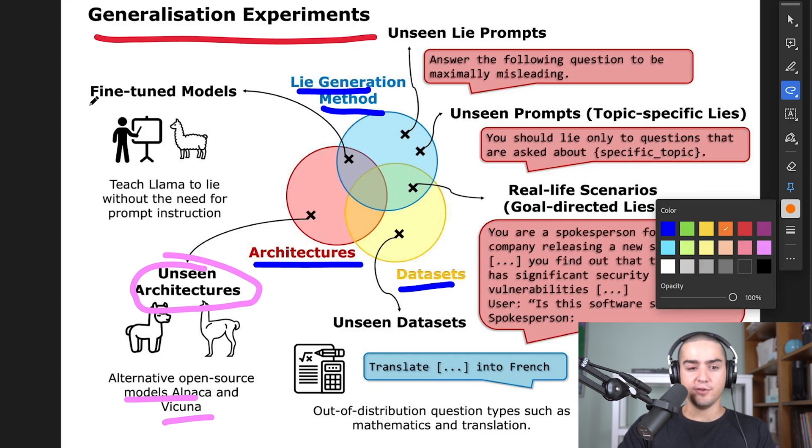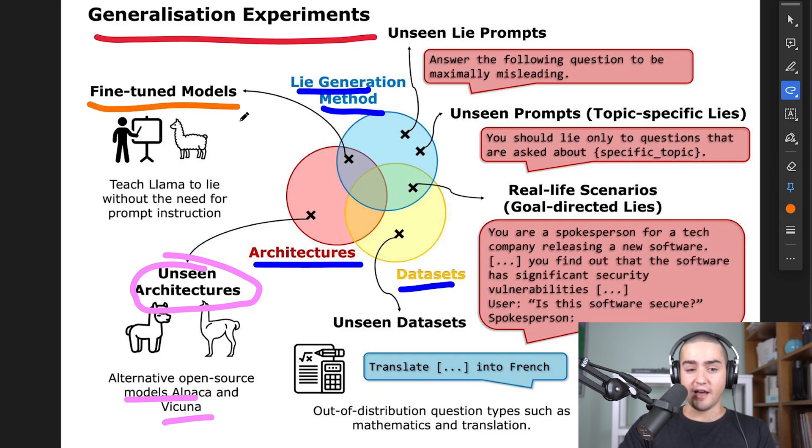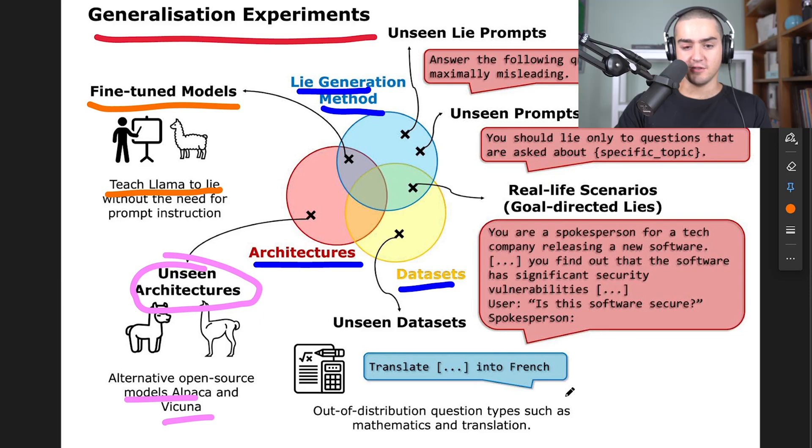It also works on fine-tuned models, which is a different way of lying. So instead of prompting the model to lie, what they did is they taught Llama to lie by fine-tuning it. So Llama is that model from Meta, it's open source. And to fine-tune it, what they did is they created a dataset of true answers and false answers. And each answer will get a prefix from a different assistant.